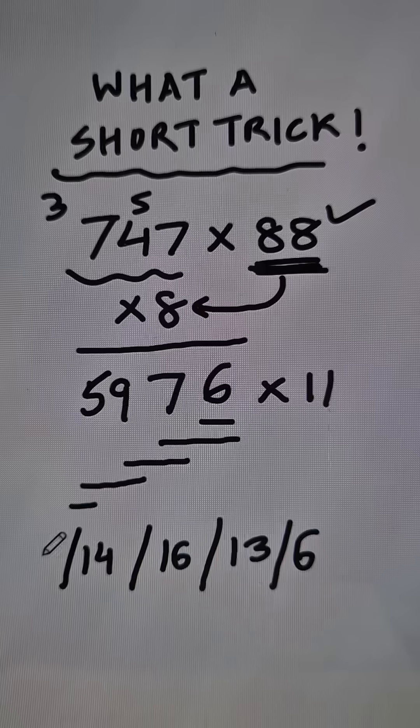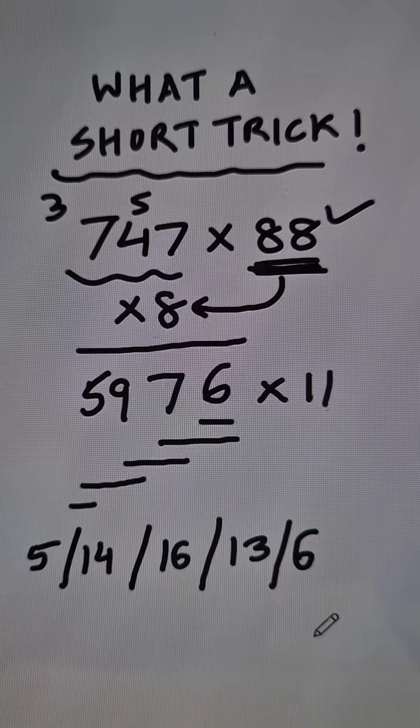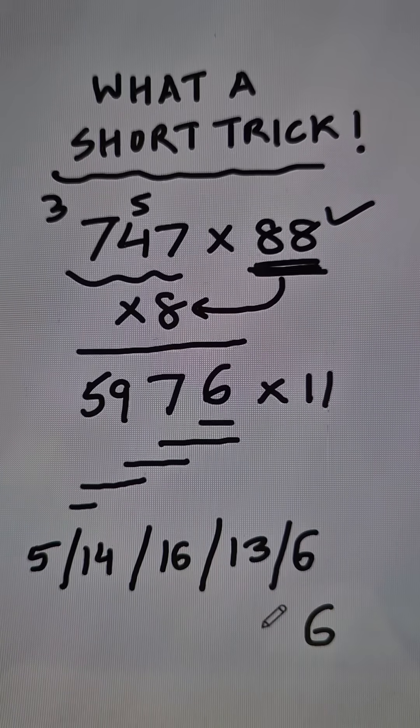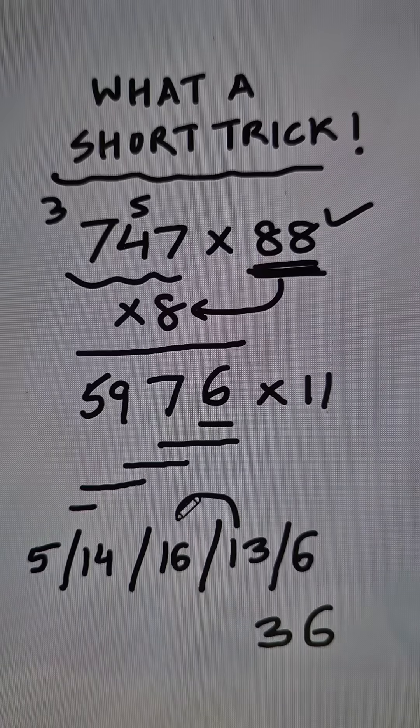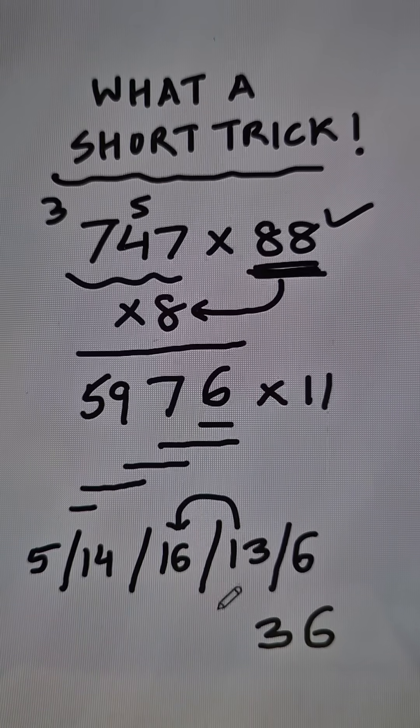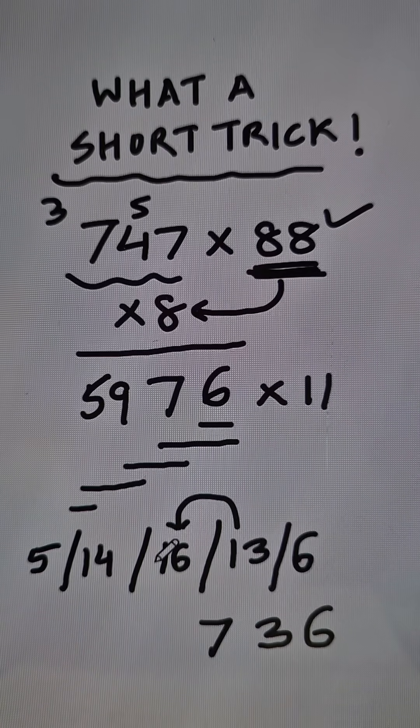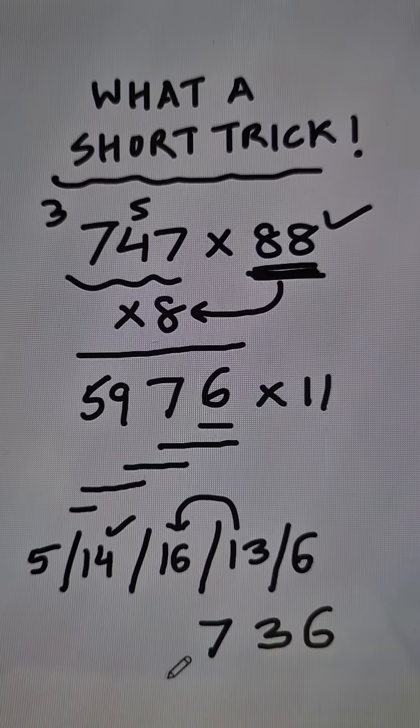So we write a 14 here and finally we write the 5, the first digit. And now start writing from the unit digit: 6. 13 means 3 with 1 carried, and then this becomes 16 plus 1 equals 17. So 7 and the 1 carried makes 14 as 15.